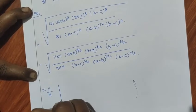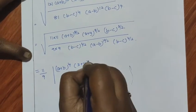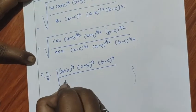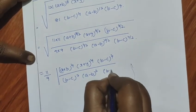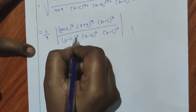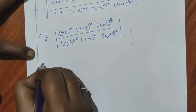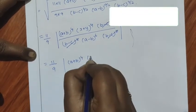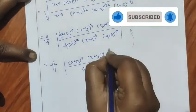Now cancel: (b minus c) power 4 in numerator and (b minus c) power 2 times (b minus c) power 2 in denominator cancel out. Taking the square root of the remaining expression with modulus, the final answer is 11 by 9 times modulus of (a plus b) whole power 4 times (x plus y) whole power 4, divided by (a minus b) whole power 6.